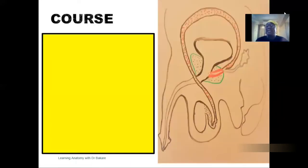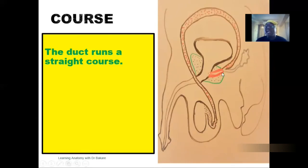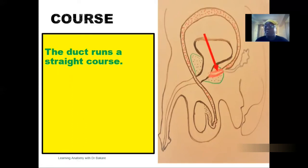Let's look at the parts through which the ejaculatory duct runs. It is a straight duct — it is not convoluted. It pierces through the prostate gland to be emptied into the prostatic urethra, running a straight course and not convoluted as seen in other regions.